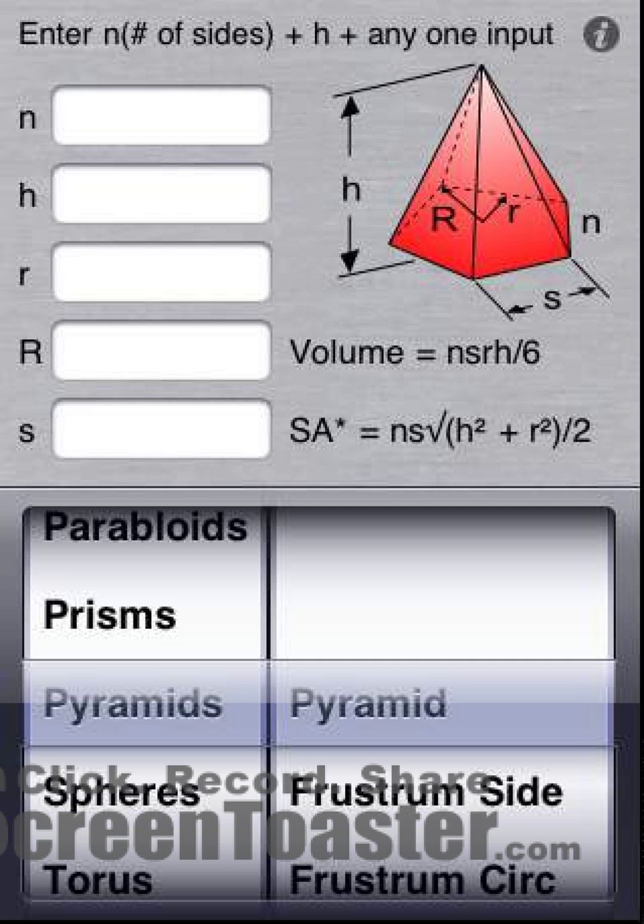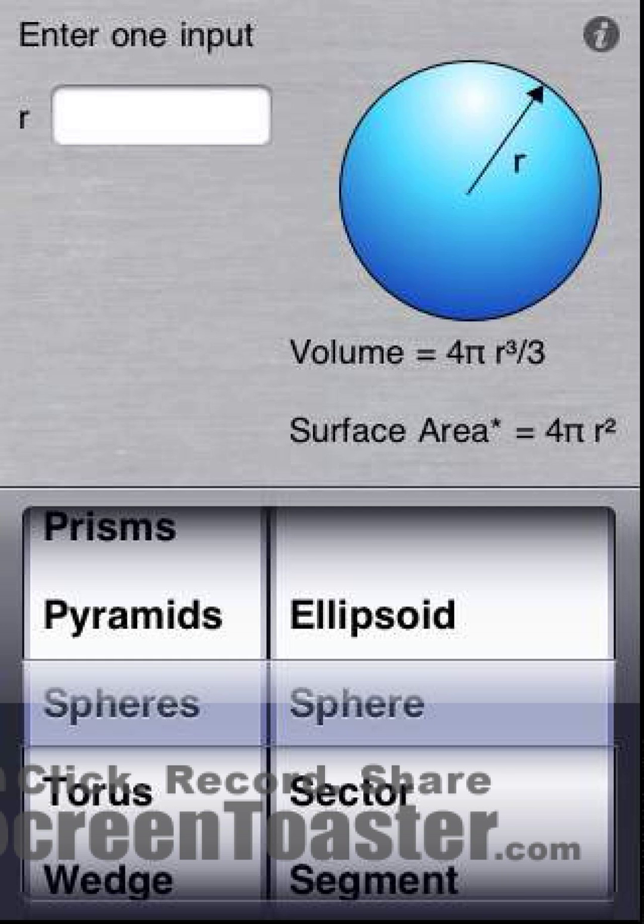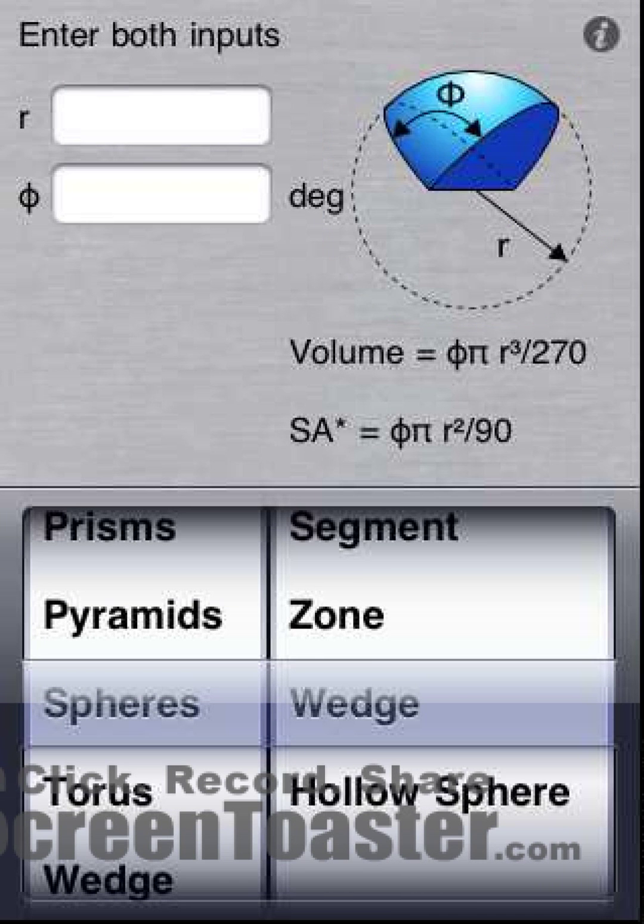Let's get right into it. We'll begin by selecting the desired category. We'll select the spheres for starters and let's select the spherical wedge.